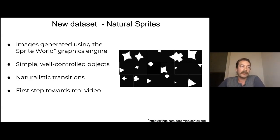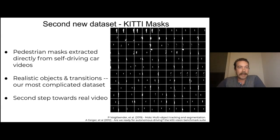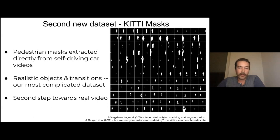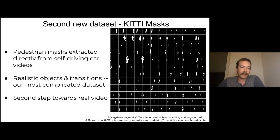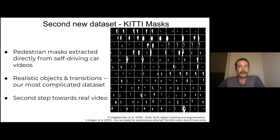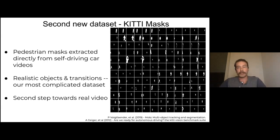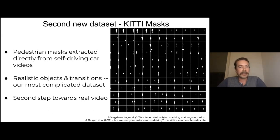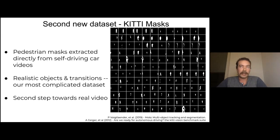And so we take the masks and we measure the scale and position data of the masks. And then we construct our own sprite dataset using the measurements that we have. And we call that natural sprites. So natural sprites are images generated using the sprite world graphics engine. So they're simple, well-controlled objects. We know all the parameters like the shape and orientation and everything. But we've added time component, made them videos. And these statistics of this time matched exactly the statistics from these YouTube videos. So this is a first step towards running this problem on realistic videos.